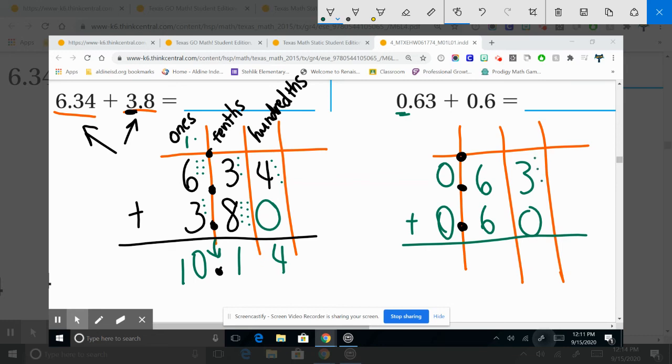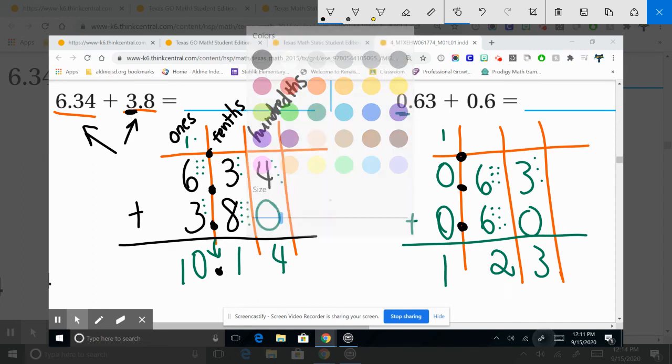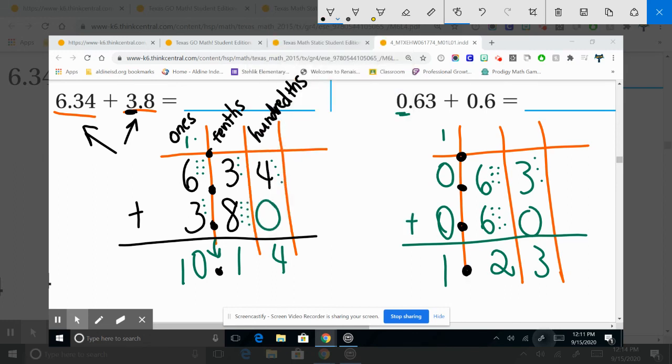Three plus zero is three. We have six and six, twelve. We regroup, carry the one. One plus zero plus zero is one. Bring down your decimal.